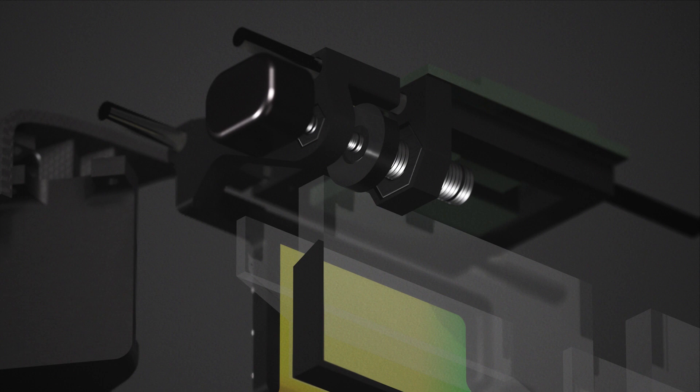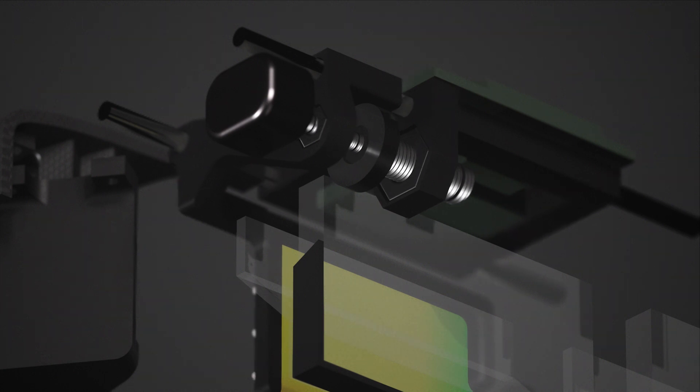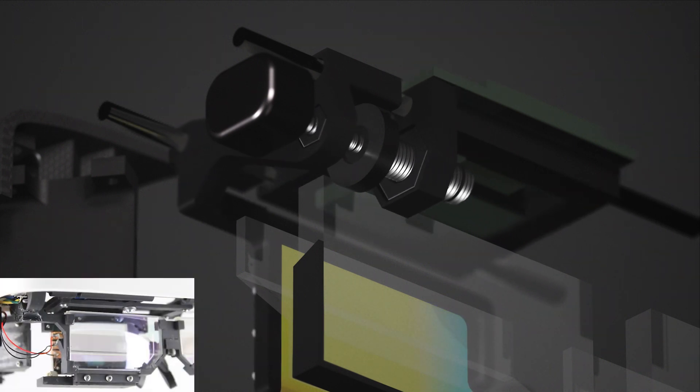A motor drives a double-threaded screw that moves the OLED and HOE at a specific travel ratio of 3 to 1.